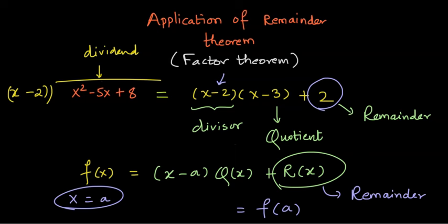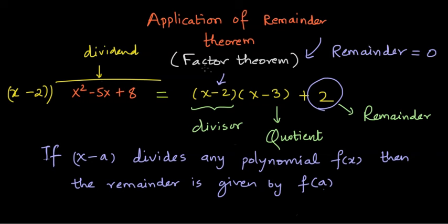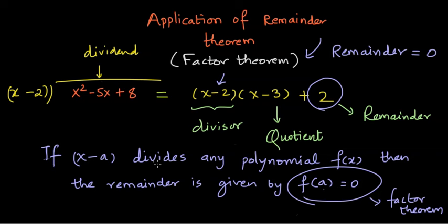To summarize: if (x - a) divides any polynomial f(x), then the remainder is given by f(a). Now, how do we apply this theorem to find factors of a given polynomial? There comes a special case when the remainder is 0, which is when we call it the factor theorem. When f(a) = 0, then (x - a) becomes a factor of the given polynomial f(x).